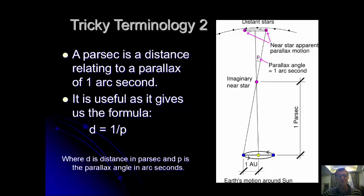Tricky terminology 2: a parsec is a distance relating to a parallax of 1 arc second. It's actually defined by this. So if we have a parallax of 1 arc second, we know that the imaginary star is exactly 1 parsec away.